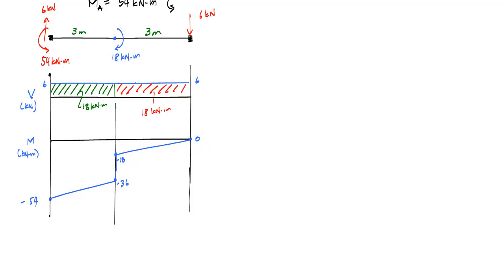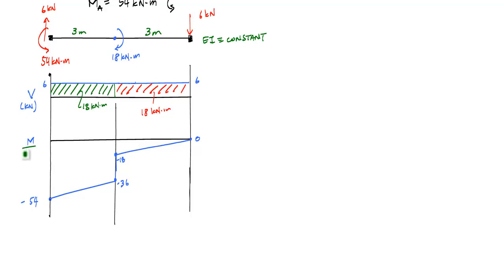The next thing is to come up with a curvature diagram. The curvature diagram in this problem has the same shape as the moment diagram because EI is constant — it's just taking the moment and dividing by EI. So all these numbers are divided by EI. This is our curvature diagram.